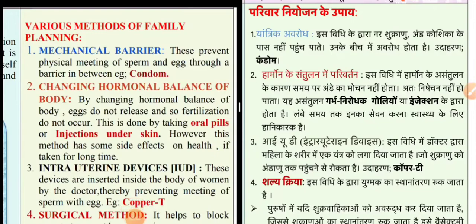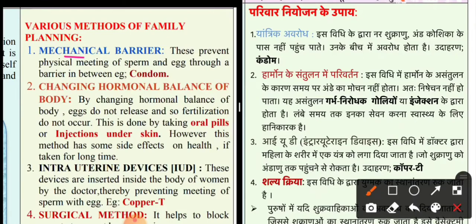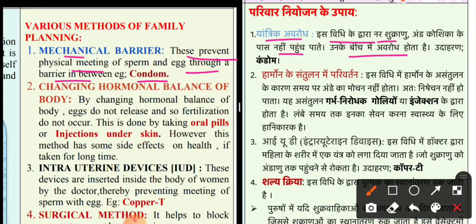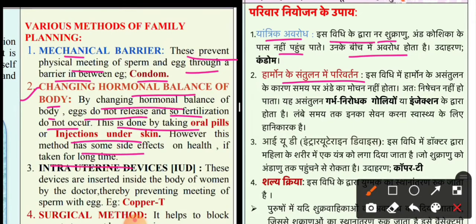Now the next topic is various methods of family planning. First in this list is mechanical barrier — yantrik avrodh. These prevent physical meeting of sperm and egg through a barrier in between. For example, condom. Second is changing the hormonal balance of the body. By changing the hormonal balance, eggs do not release and so fertilization does not occur. This is done by taking oral pills or injections under skin. However, this method has some side effects on health if taken for long time.